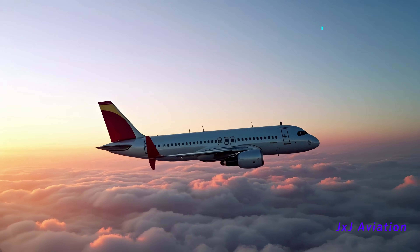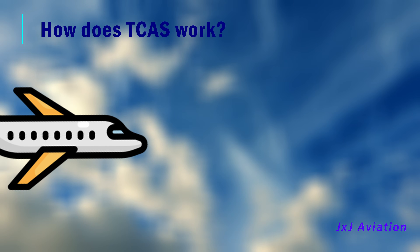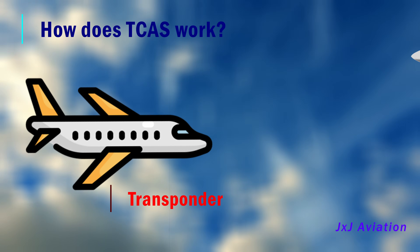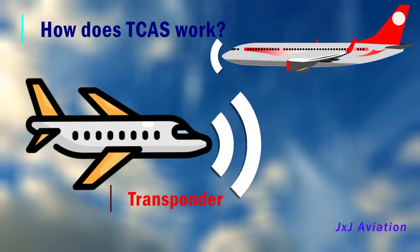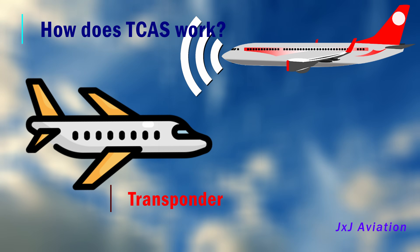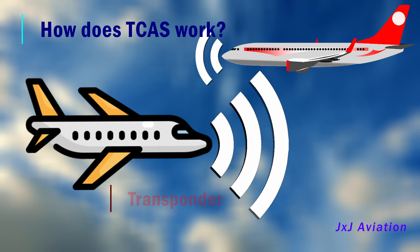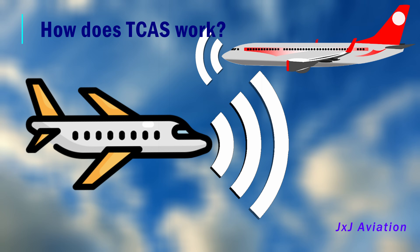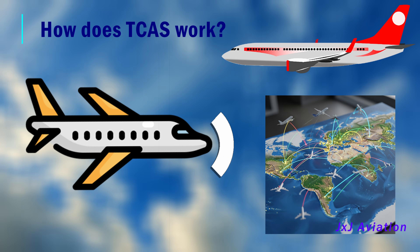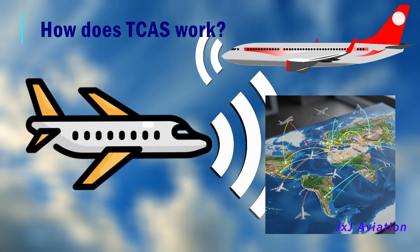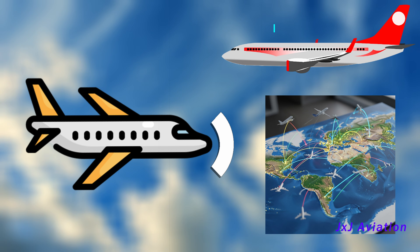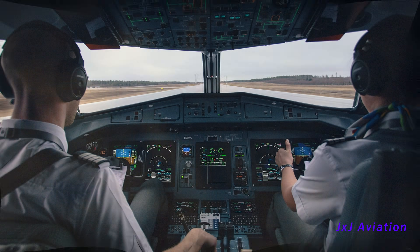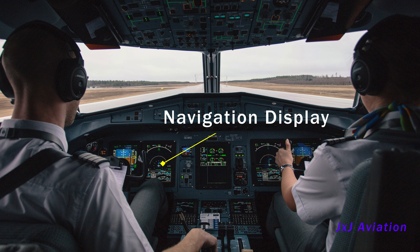How does TCAS work? The TCAS uses a transponder installed on the aircraft. This transponder interacts with all active transponders on nearby aircraft. Based on the information received, the TCAS builds a real-time 3D map of all nearby aircraft, and displays this information to the pilots on the Navigation Display, or ND.